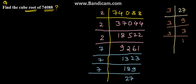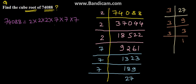So here we have the factors for 74088. We can write 74088 = 2 × 2 × 2 × 7 × 7 × 7 × 3 × 3 × 3.